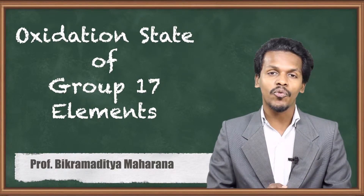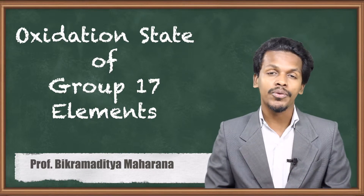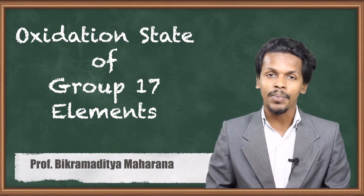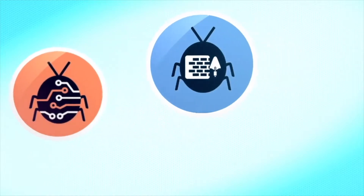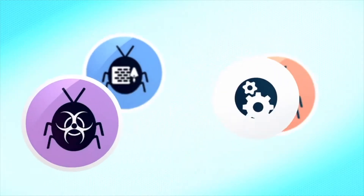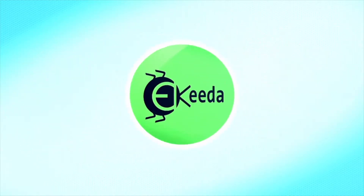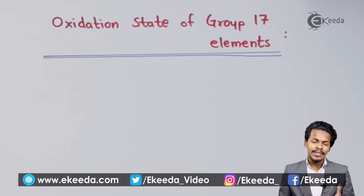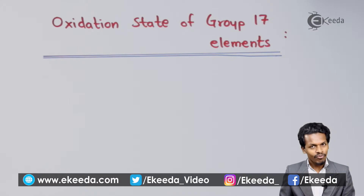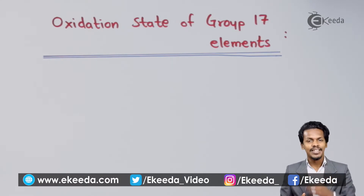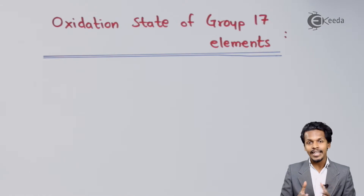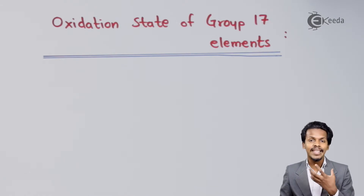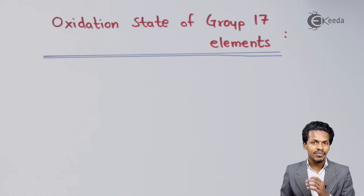So what are the common oxidation states of group 17 elements? This is what we are going to talk about in this topic. So now let us understand this. As we discussed earlier, let me give you an example related to the electronic configuration so that we could understand what would be the oxidation state of the halogen family.